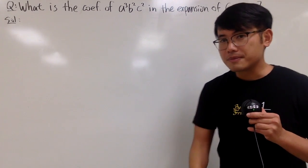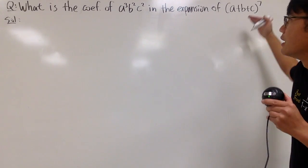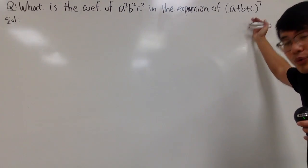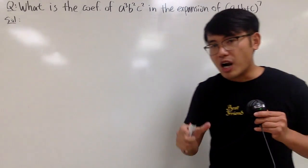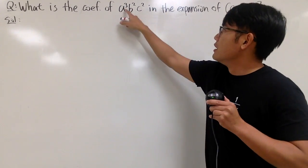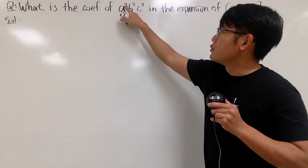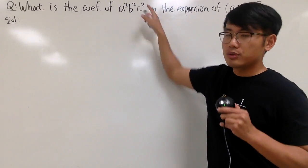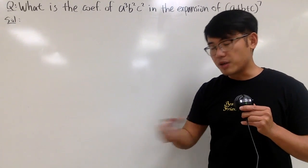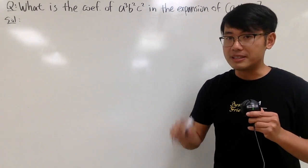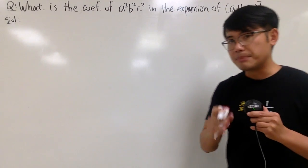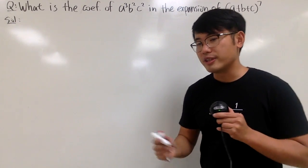Here's the deal: I don't know how many terms I have yet, but I will tell you each term has degree seven. For example, the degree here is three plus two plus two, which is seven. All the degrees for the terms will all be seven — this is always true, just like the binomial situation.